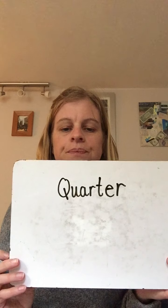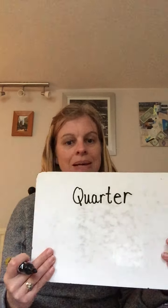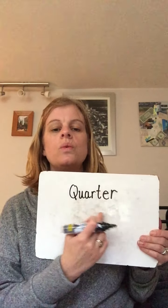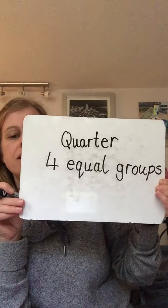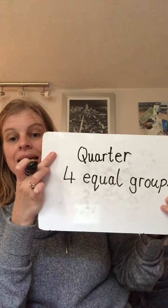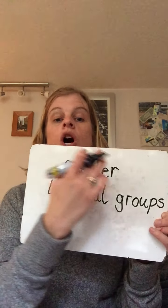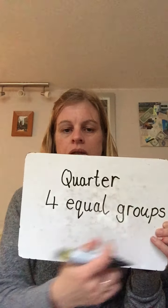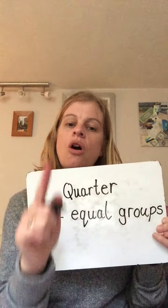Today, we're going to go on and think about quarters. Let me write that word down — a quarter. It's a funny word, isn't it? We're going to find quarters. A quarter is a bit like a half, it's still a fraction. But this time, if we're finding a quarter, we are going to be finding four equal groups. A quarter is one of four equal groups. There will be four equal groups, and a quarter is one of those equal groups.